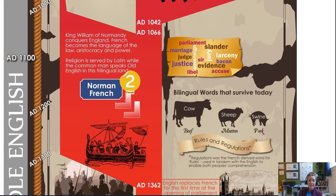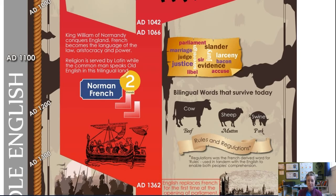Many words we use today came into English from this time period. Because we had a bilingual society, we now sometimes have two words that exist for one item. For example, let's look at 'cow' and 'beef.' The word 'cow' was the English word for the living animal. The French word for cow was essentially 'beef.' So when we talk about the living animal we call it a cow, and the French called that same thing 'beef.'